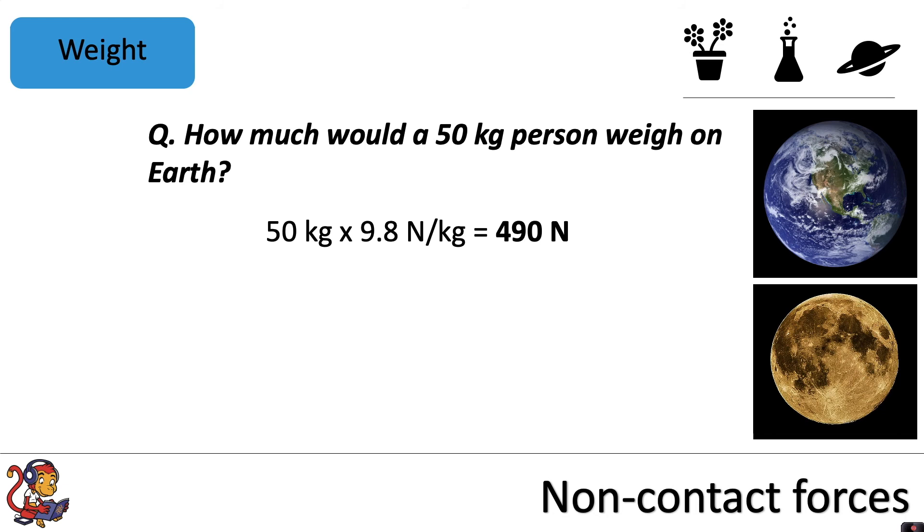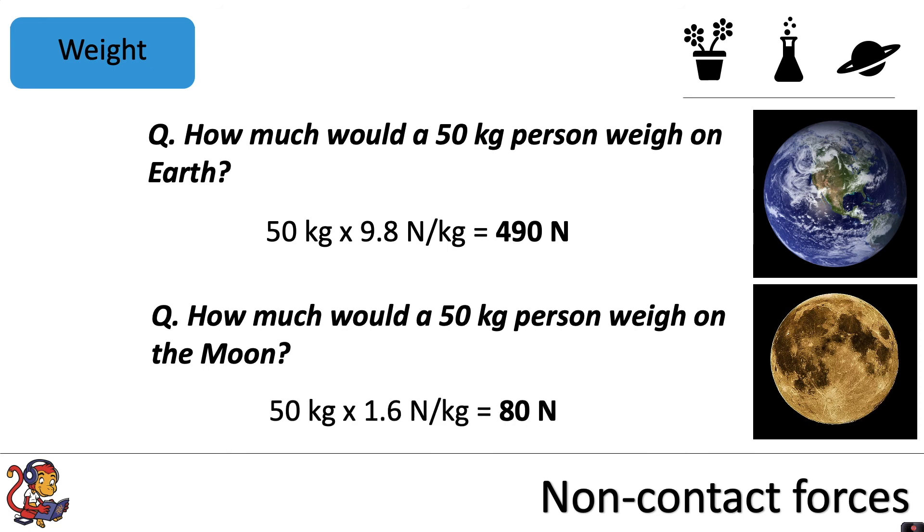But let's now compare that to the Moon. How much would a 50 kilogram person weigh on the Moon? Well, this time we do 50 kilograms multiplied by 1.6 newtons per kilogram because that's the gravitational field strength on the Moon, and we get a weight of 80 newtons.